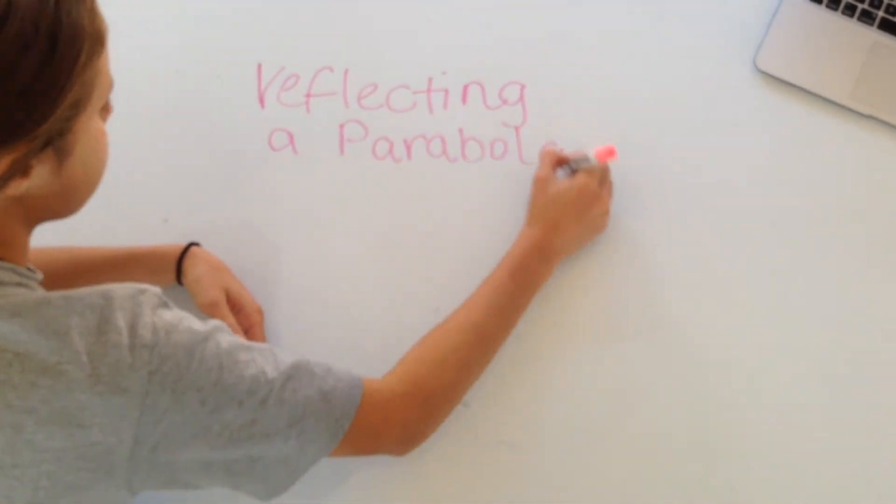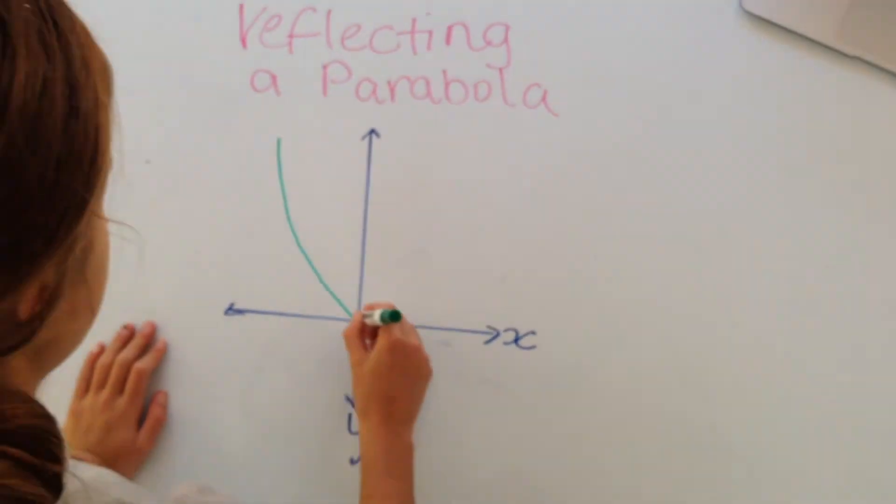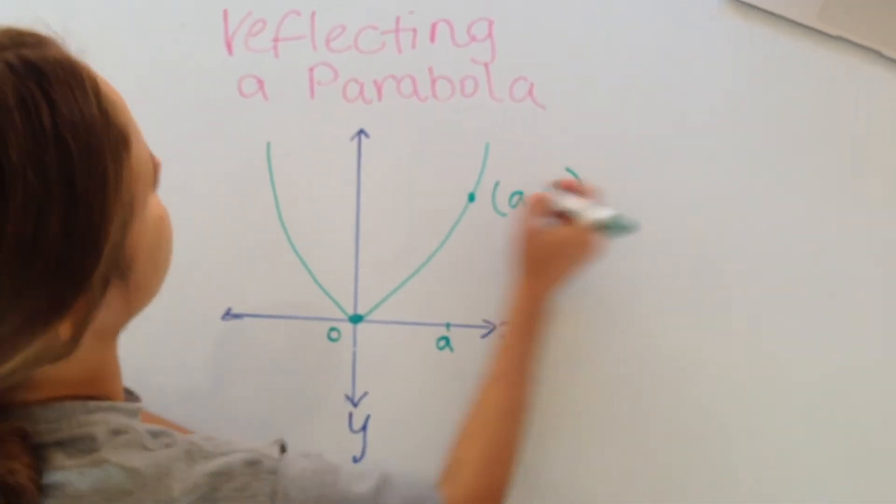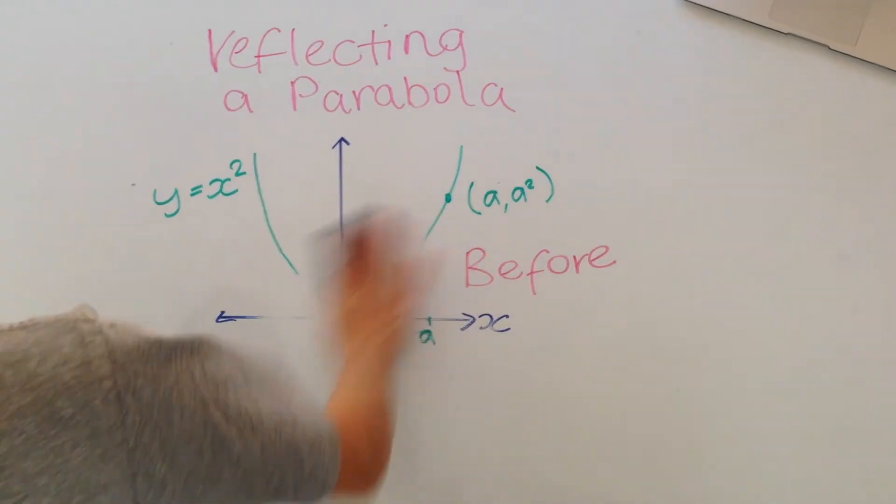Parabolas can also be reflected on the x-axis. This means the parabola y equals negative x squared is a reflection of the original parabola in the x-axis.